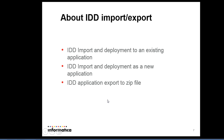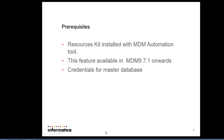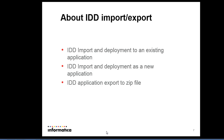Now we will see IDD import and export. The IDD import and export option is available in the MDM automation tool, which is available for versions 9.5.1, 9.6.1, and 9.7.1. For MDM 9.5.1 it is available with JBoss application server. This tool simplifies manual operations and runs them through the command line. With this tool we can do: IDD import and deployment to an existing application, IDD import and deployment as a new application, and IDD application export to a zip file.